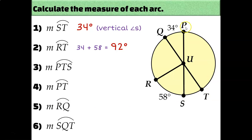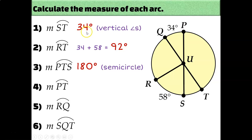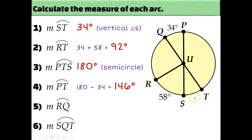Now let's calculate arc PTS. Since PS is a diameter, arc PTS is a semicircle measuring 180 degrees. Subtracting the 34-degree arc ST gives us arc PT of 146 degrees. For arc RQ: arc QRT is also a semicircle — it adds up to 180. Subtracting 58 and 34 from 180 gives arc RQ as 88 degrees.